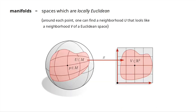Manifolds are defined as spaces which are locally Euclidean and second countable Hausdorff. That means that around each point P on the manifold, you find a neighborhood which is homeomorphic to a Euclidean space or to a region of Euclidean space.